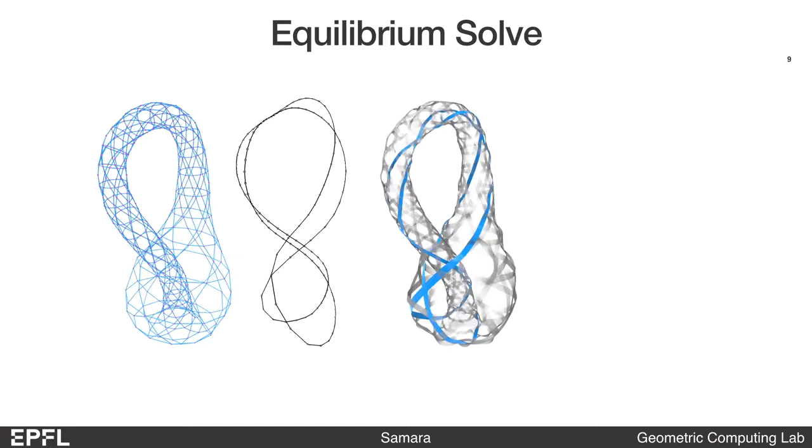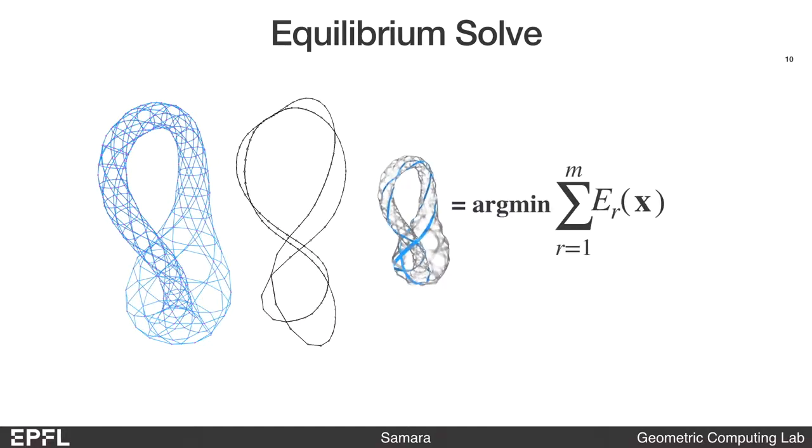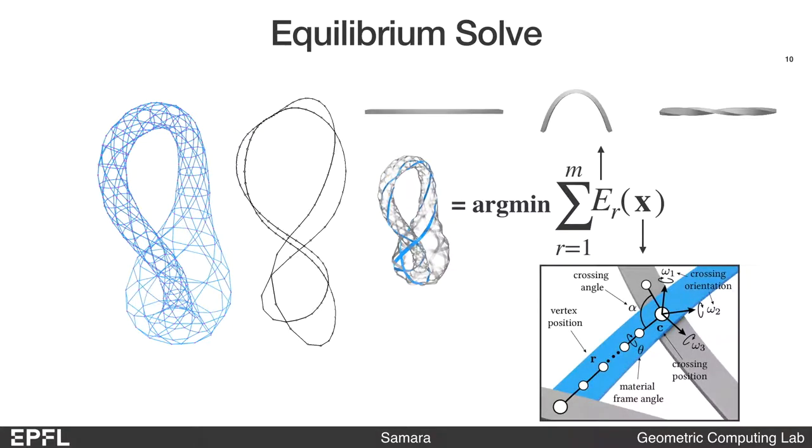We can then find the equilibrium state of the initial woven structure. This is done by minimizing the elastic energy of the structure, which is just the sum of the elastic energy in all ribbon segments. The vector x contains all the simulation variables.